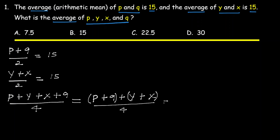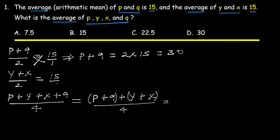Now, the value of (P + Q) and (Y + X) are given. Using cross multiplication: P + Q is equal to 2 times 15, which equals 30. Similarly, Y + X is equal to 2 times 15, which equals 30.